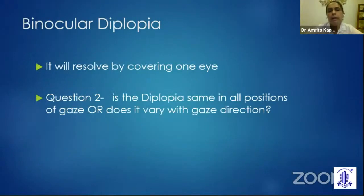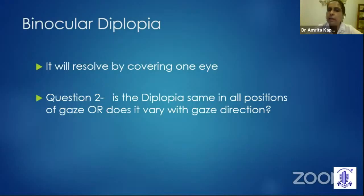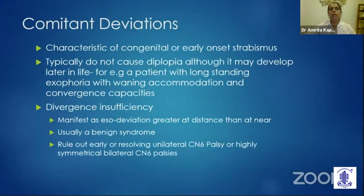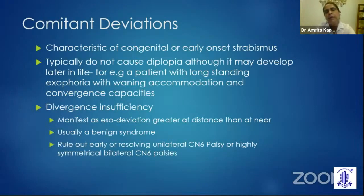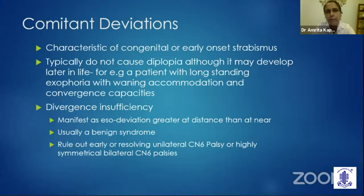If the patient's diplopia resolves by covering one eye, it means it's binocular diplopia. Then we come to question two: is the diplopia the same in all positions of gaze, or does it vary with gaze direction? When it's the same in all positions of gaze, it means it's a comitant deviation, characteristic of congenital or early-onset strabismus — typically not associated with diplopia. However, we do see older patients presenting with diplopia when a well-controlled exophoria or esophoria decompensates due to waning accommodation. Another type of comitant deviation leading to diplopia is divergence insufficiency, which manifests as an esodeviation greater at distance than at near.